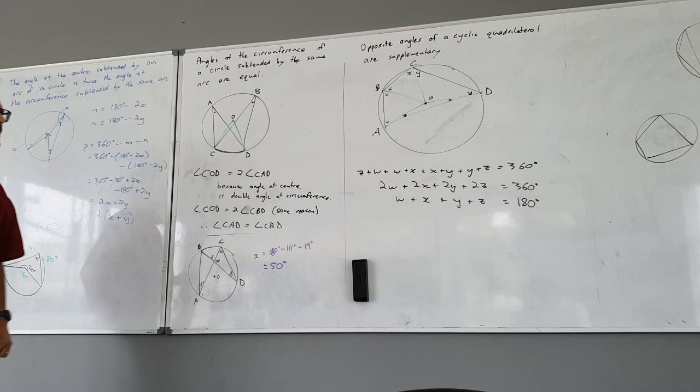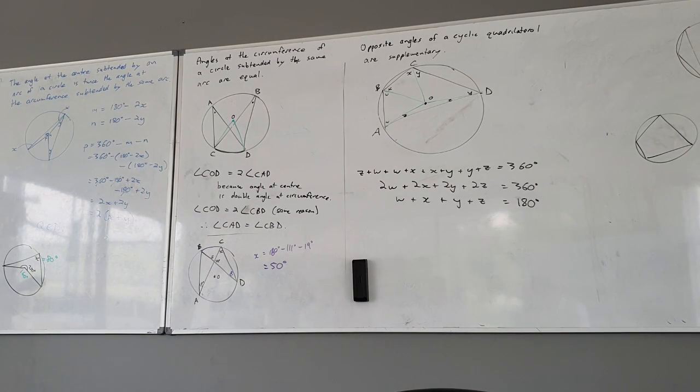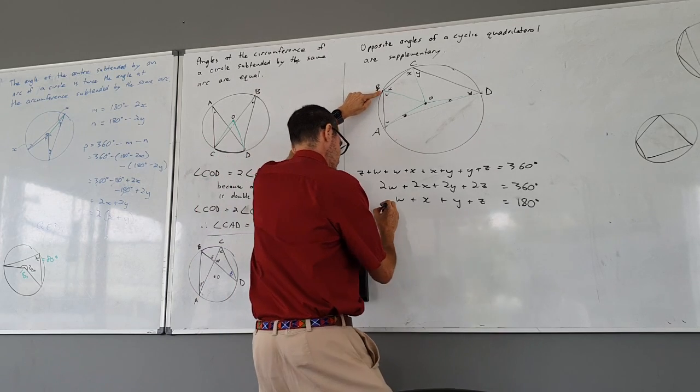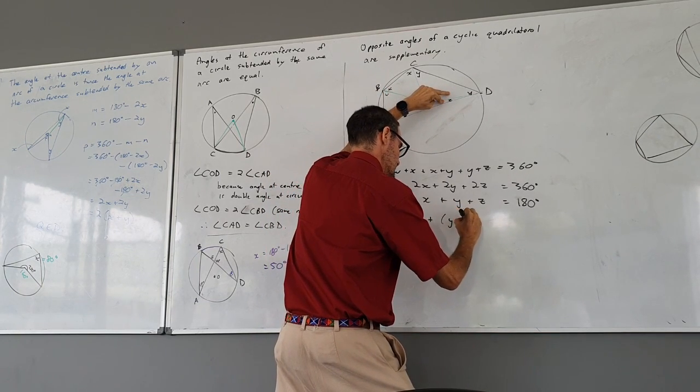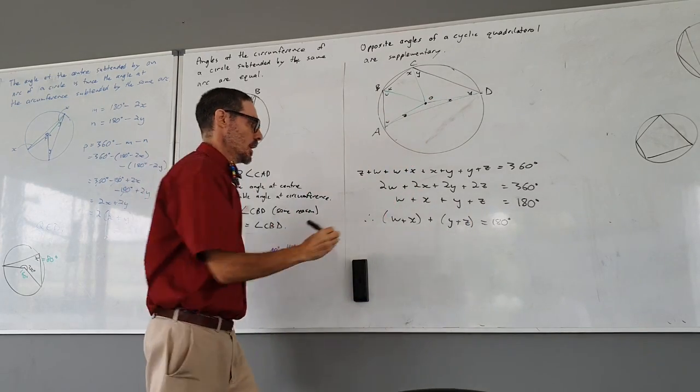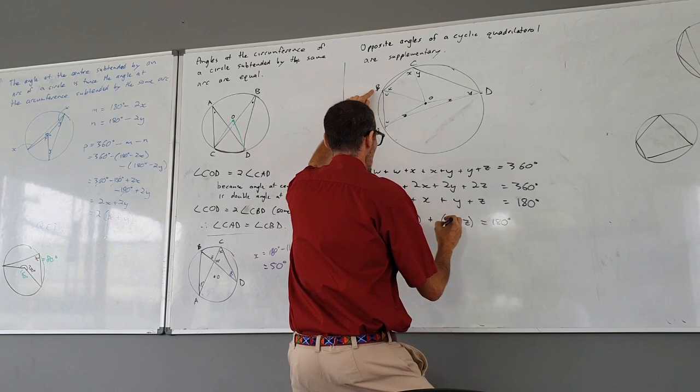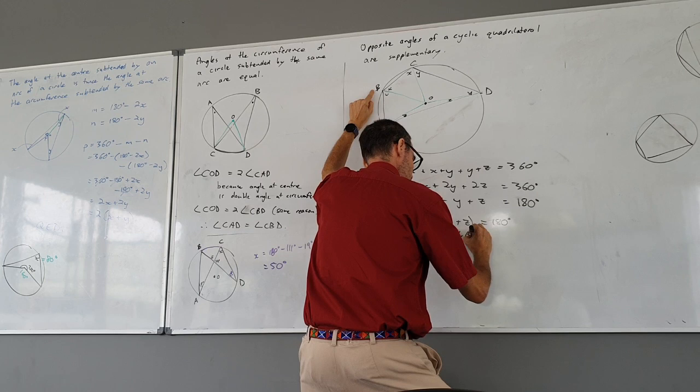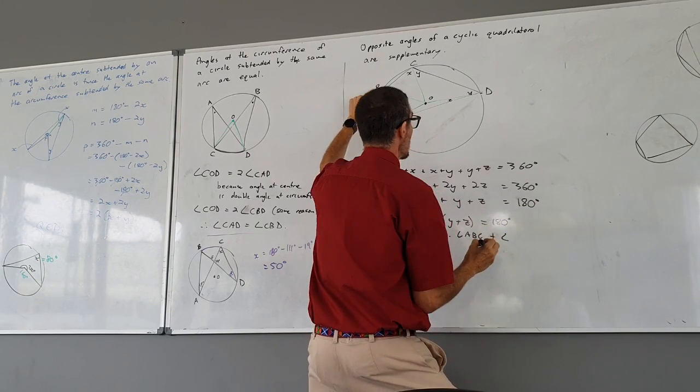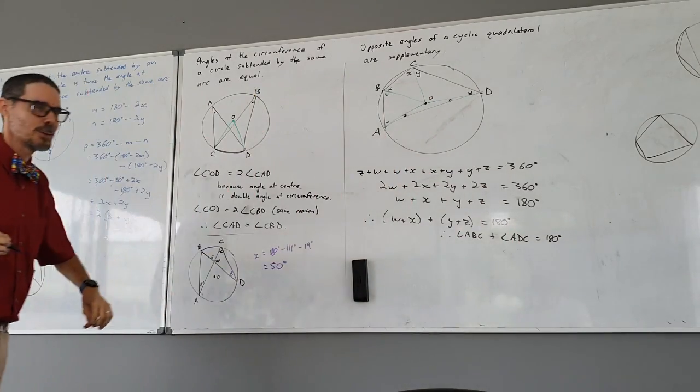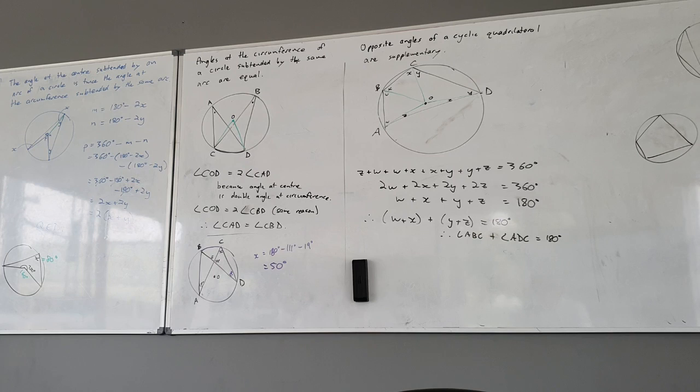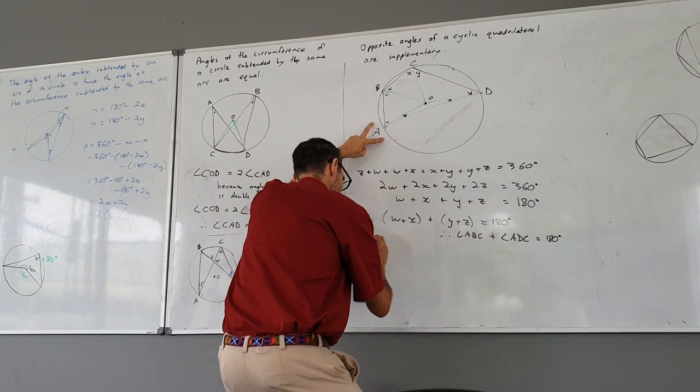180 degrees, which means angle ABC plus angle ADC must add to 180 degrees. Those opposite angles are supplementary. I could also, if I prefer, group them the other way.